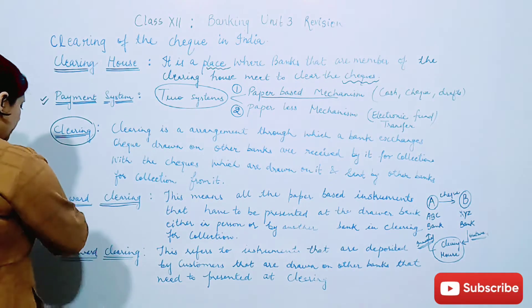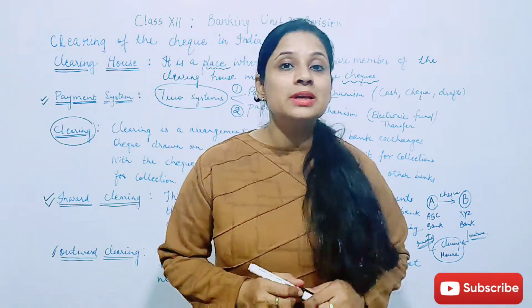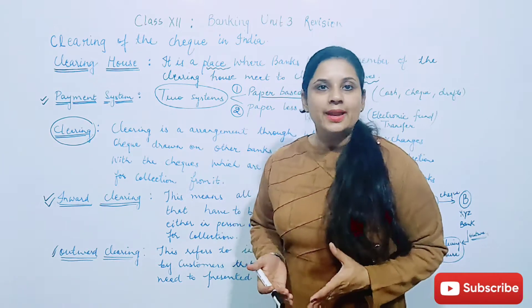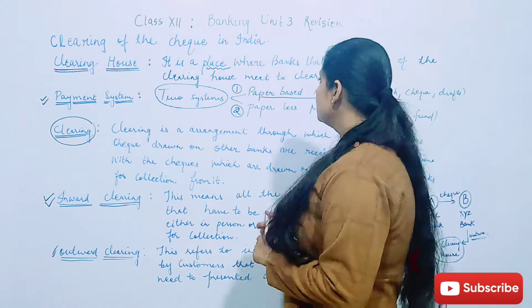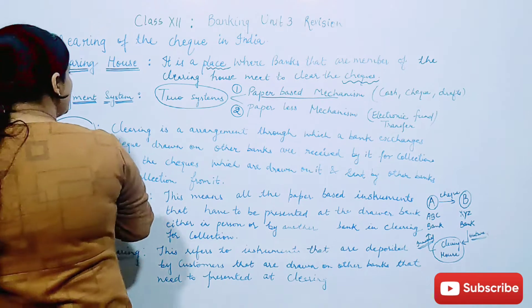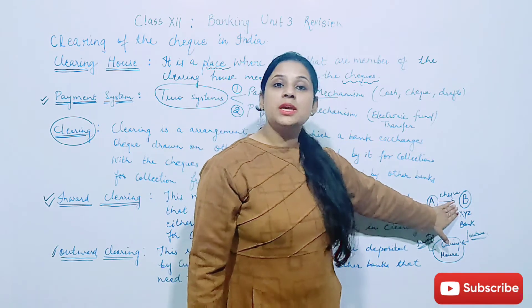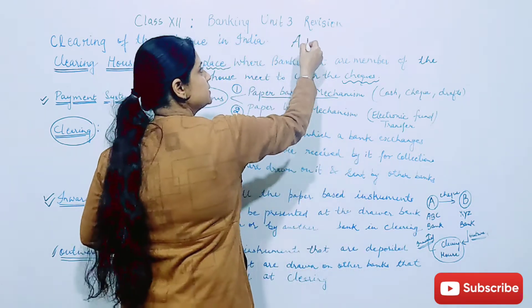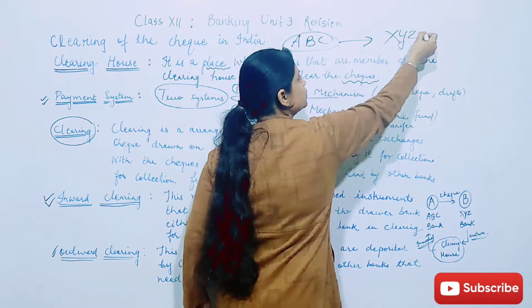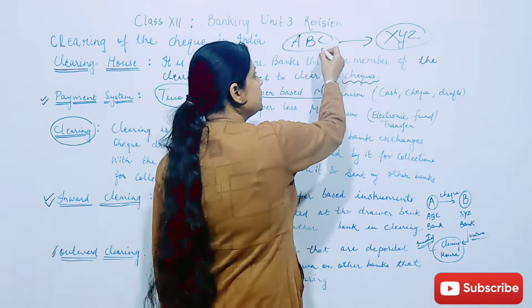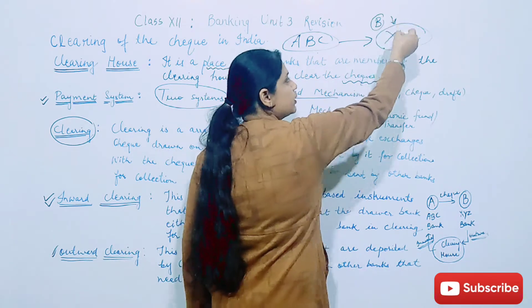Now let us understand what is inward clearing and what is outward clearing. Inward clearing basically tabhi hota hai jab hum paper based mechanism follow karte hai. Like I already told you, hamne two parties liye hai, A and B. A ne cheque transfer kiya B ko. A ka bank ABC bank hai, and he transferred ABC bank ka check to B jiska account XYZ bank mein hai. So when B party apne bank mein is check ko present kiya hai for clearing,